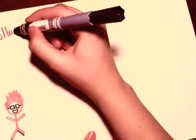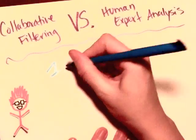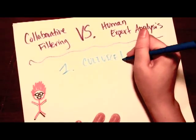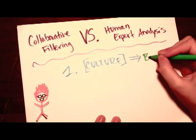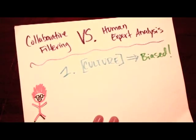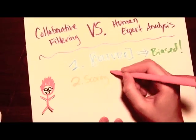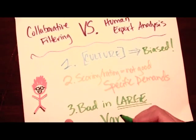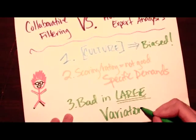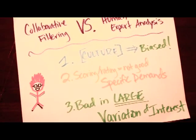But why not use ratings? There are a few reasons why human expert analysis is used by Pandora instead of collaborative filter. The first reason is that the kind of music people listen to can be based on their culture. This means that ratings or votes can be biased towards what is popular in a specific culture. The second reason is that ratings or scoring cannot be as specific to the interest of a single user. The third reason is that collaborative filtering is not a good option when there is a large variation of interest, such as that which is seated in music recommendation.